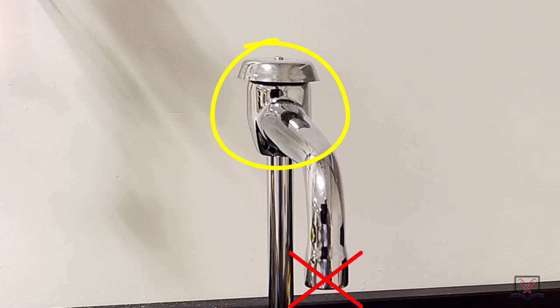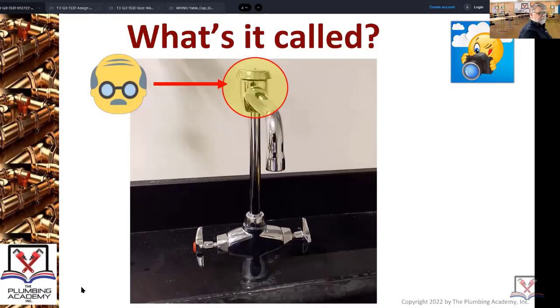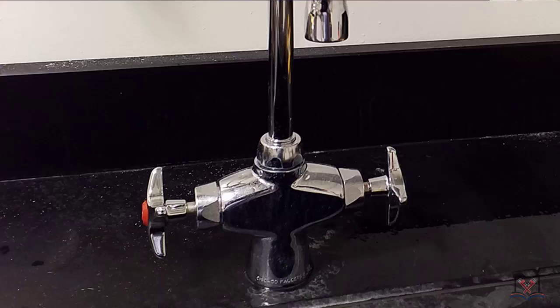That's why you're always seeing them on lab sinks like this. A lot of times you're going to see them out in the field installed wrong. People will put shutoffs on, they'll have hose connections on here with shutoffs. Can never do that. It doesn't do what it needs to do if there's a shutoff.